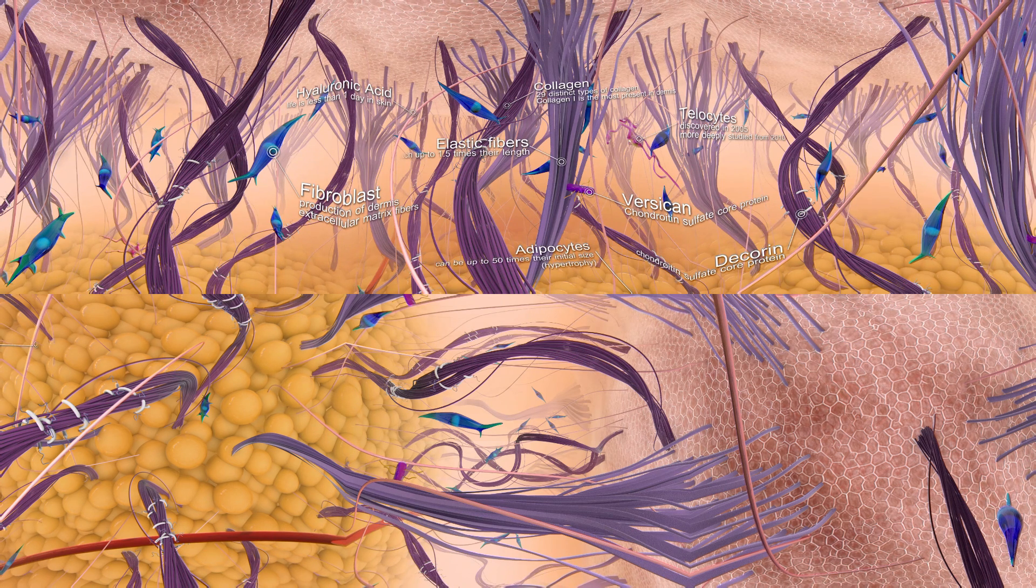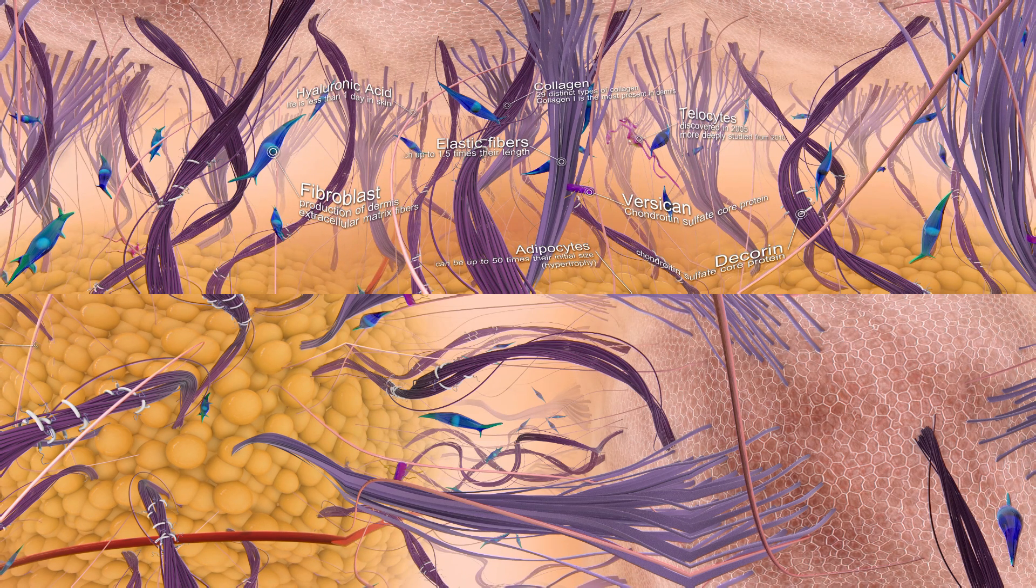Givaudan Active Beauty offers you a large range of anti-aging active ingredients to rejuvenate the skin and remove superficial wrinkles by reinforcing your extracellular matrix. Discuss your needs with us and we will guide you through our cosmetic actives collection.